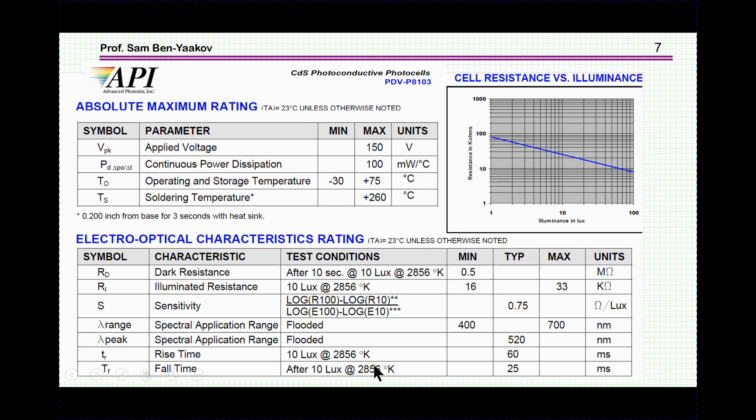And then it has also, which is important, the rise time and fall time, that is how fast is the device. And you can see that from dark to 10 lux with white light, it's about 60 millisecond, and the fall time is about 25 millisecond. So it's a fairly slow device.